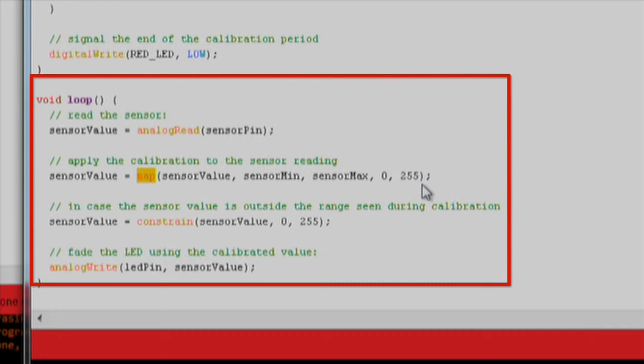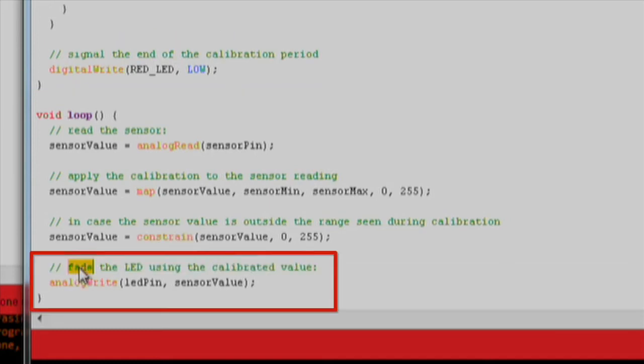We also use a function called constrain to ensure that we cap our values between 0 and 255, and don't go beyond this range. Now that we have it all mapped and constrained, we use the analog write function to alter the brightness of our LED.